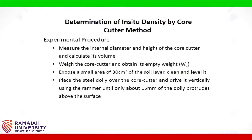Experimental Procedure: Measure the internal diameter and height of the core cutter and calculate its volume. Weigh the core cutter and obtain its empty weight W1. Expose a small area of 30 cm square of the soil layer, clean and level it.